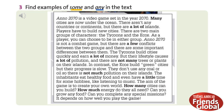Anno 2070 is a video game set in the year 2070. Many cities are now under the ocean. There aren't any countries or continents, but there are a lot of islands. Players have to build new cities. There are two main groups of characters, the Tycoons and the Echoes.